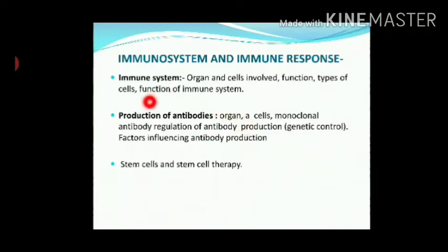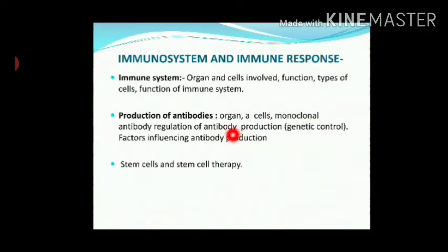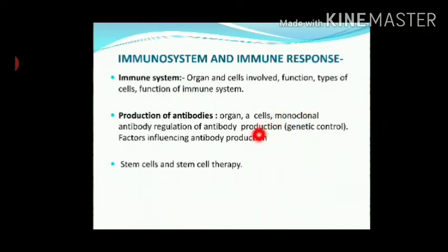Then production of antibody — this is the function of B cells and organs, bursa or fabricius cells, how they are produced, then monoclonal antibodies. This is also a separate point. Then its regulation at genetic level and factors affecting antibody production — how antibodies are produced, what is meant by monoclonal antibody, and the hybridoma technique is used to produce monoclonal antibodies.